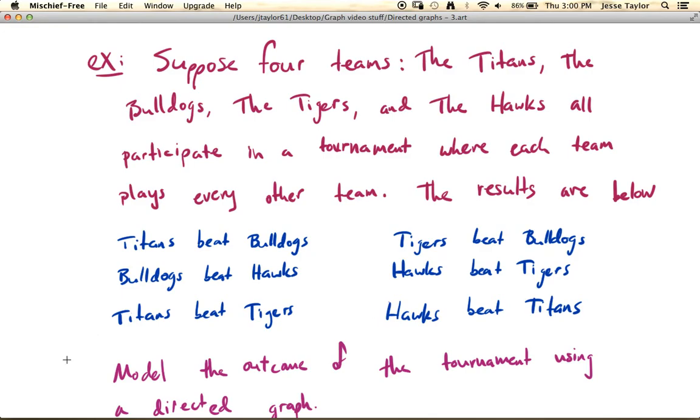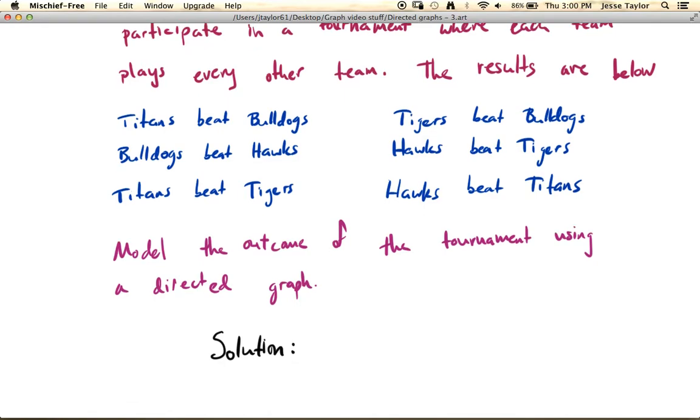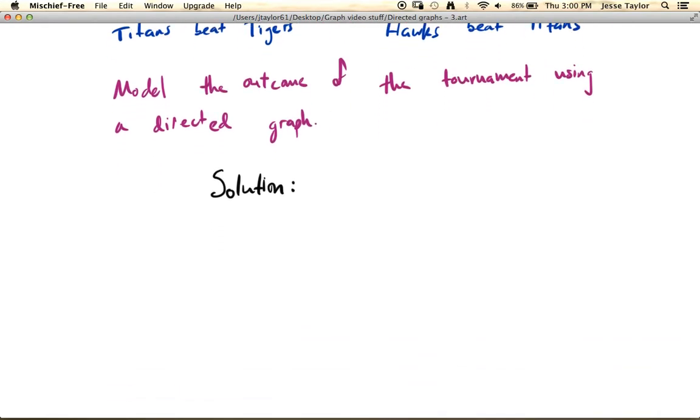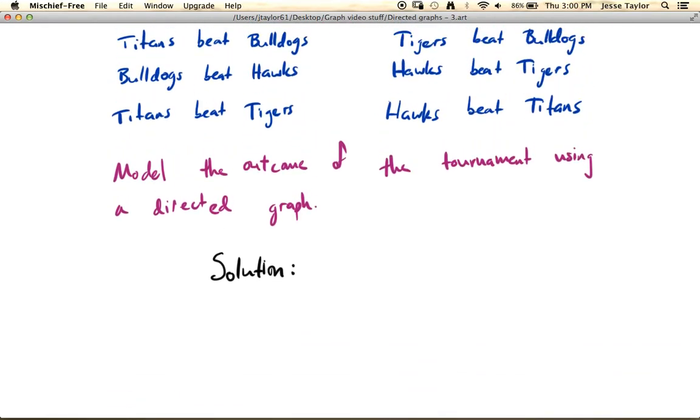We want to model the outcome of this tournament using a directed graph. We know that every team plays every other team, so we're going to have our vertices represent each team. We're going to have four vertices, one for each team.